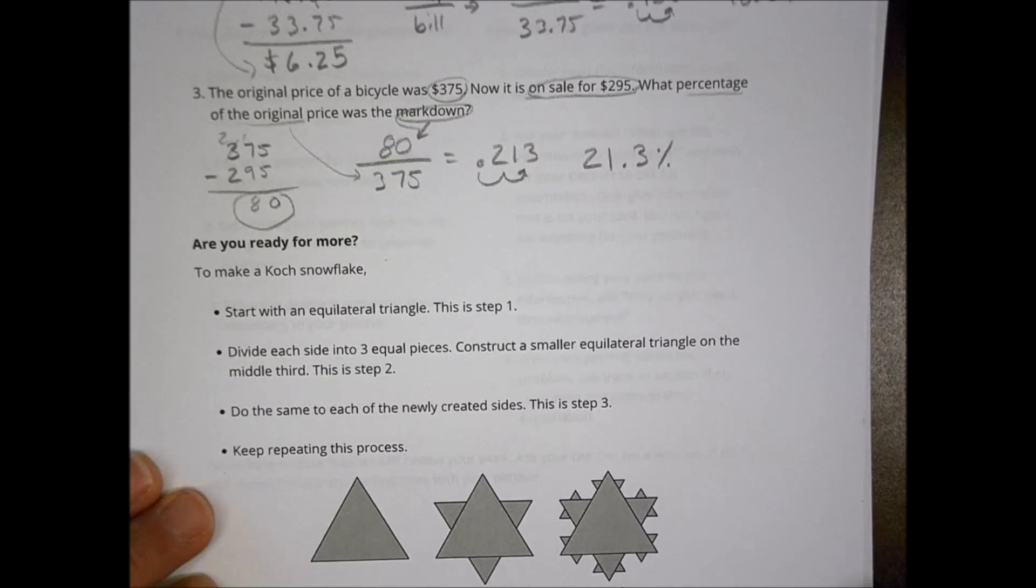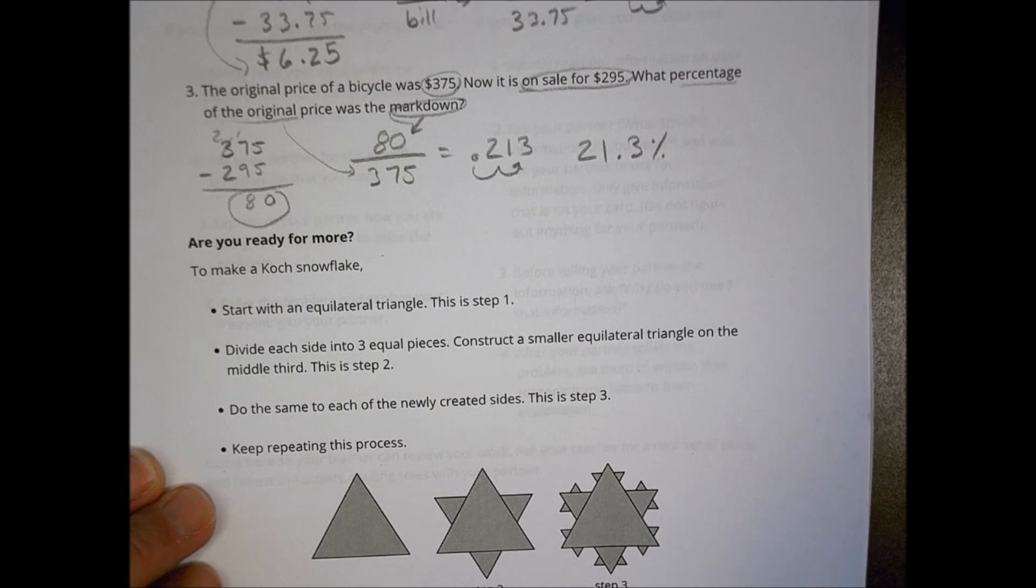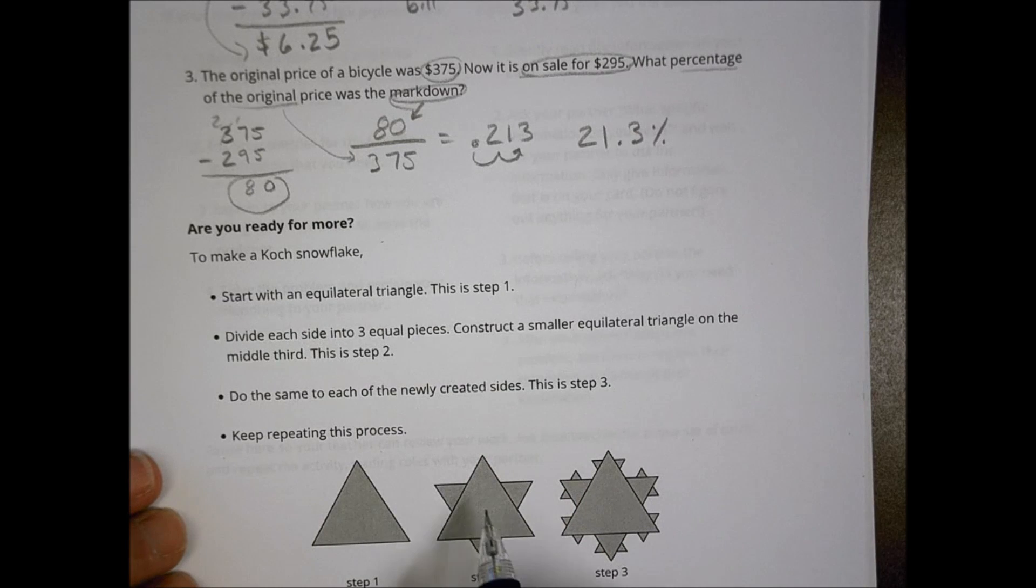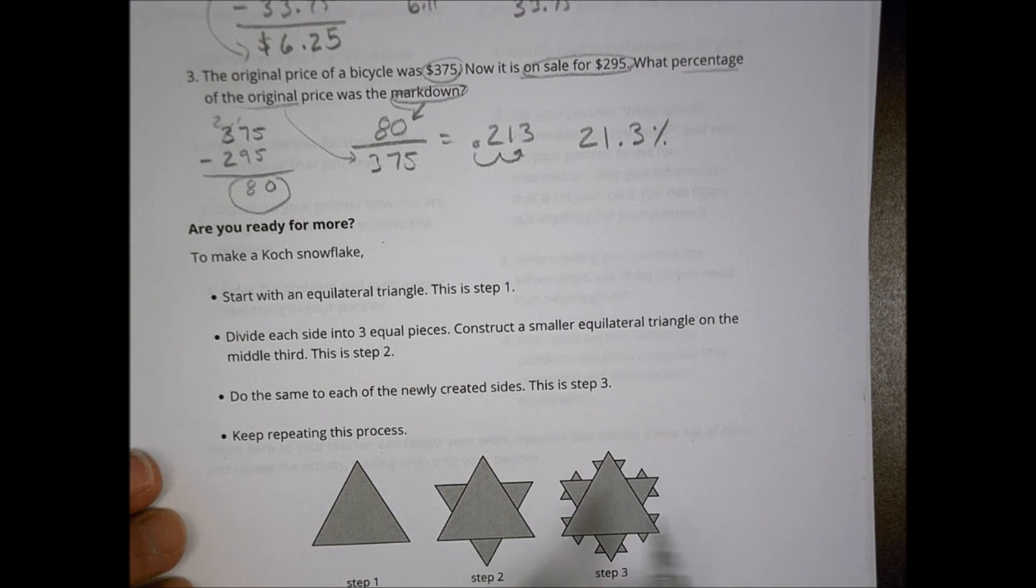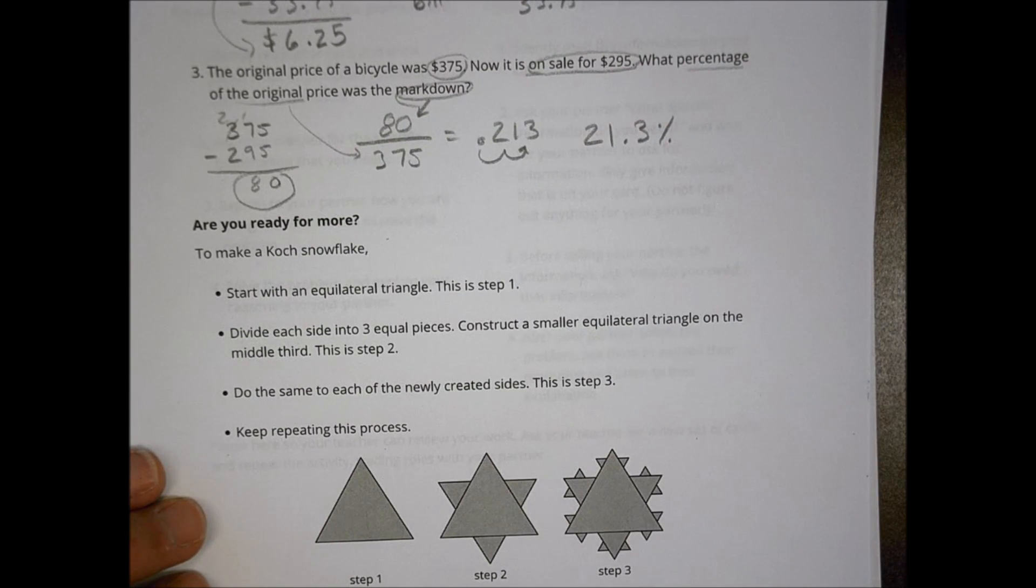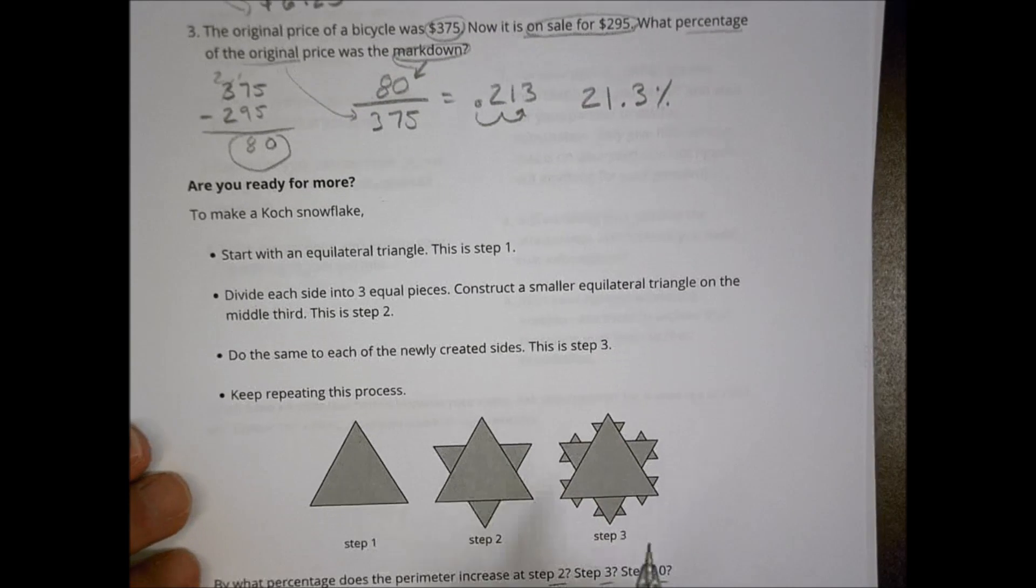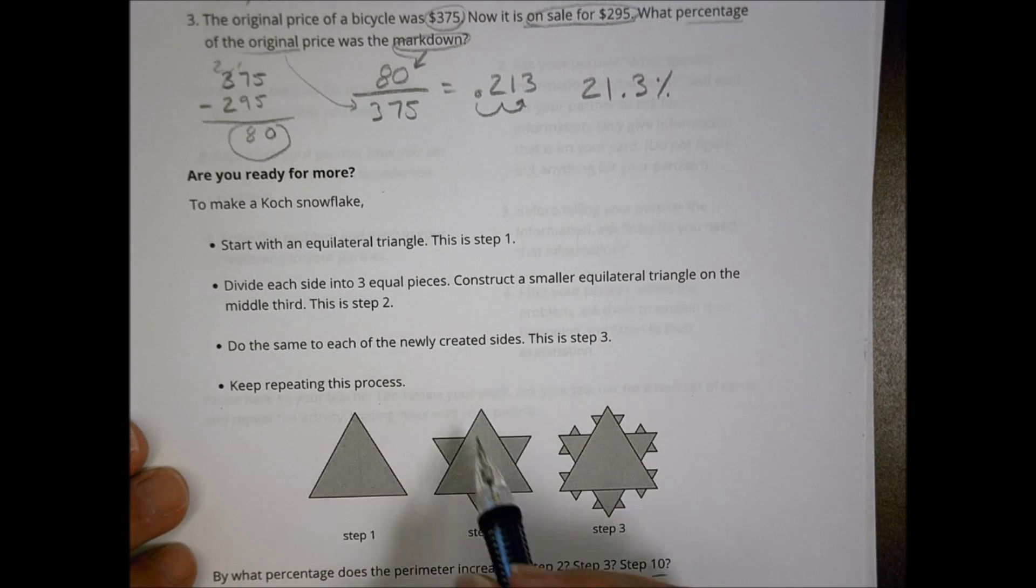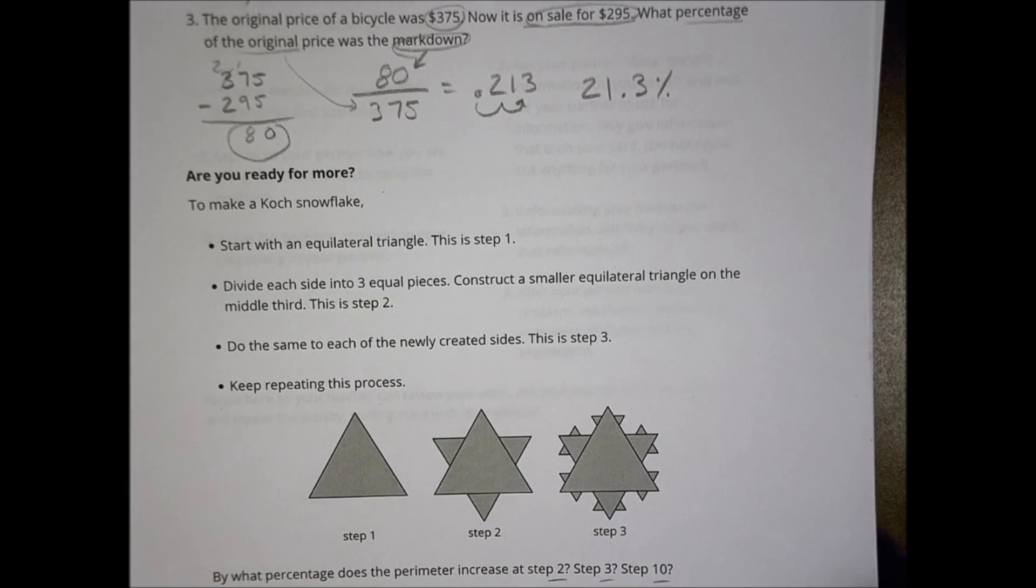So you had a little question here on are you ready for more? And you may or may not have done that in the class. But you're looking at this equilateral triangle with step one, and each time you do it, you're adding it there. And so you're looking at what percentage does the perimeter increase at the various steps there. It may be a little more complicated than you want to deal with right now. That's okay. I know for me, I'm going to skip this part here. But if you did this in class, then awesome. Hopefully you got a good solution there.